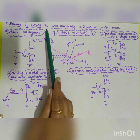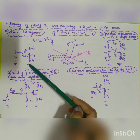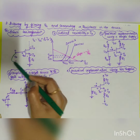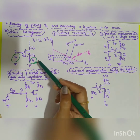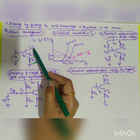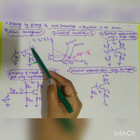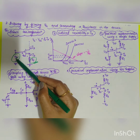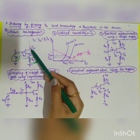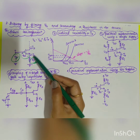Therefore we go for the second type: biasing by fixing VG and connecting a resistance RS in the source. Here VG is fixed and RS acts as a feedback resistor, providing negative feedback to maintain ID constant. As the current ID increases, since VG is constant, VGS will decrease, which in turn decreases ID — opposing the original increase.